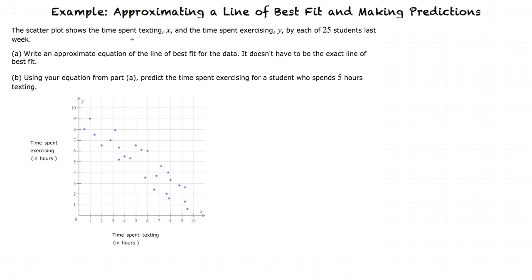The scatter plot shows the time spent texting, x, and the time spent exercising, y, by each of 25 students last week. There are two parts to this problem.